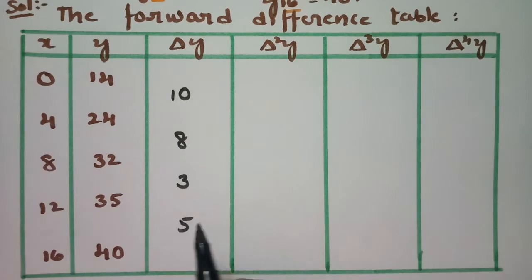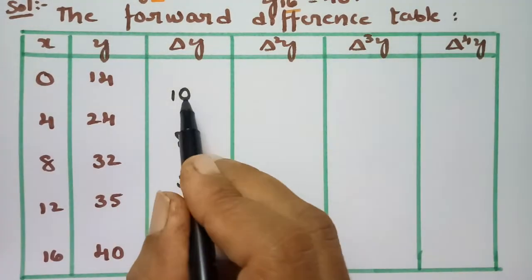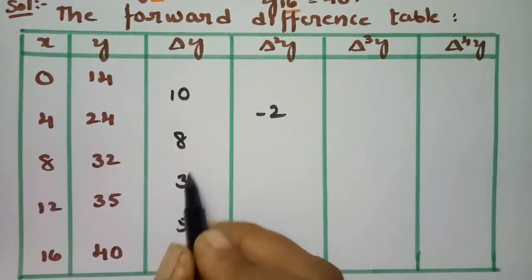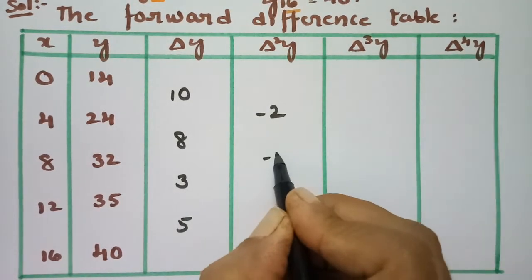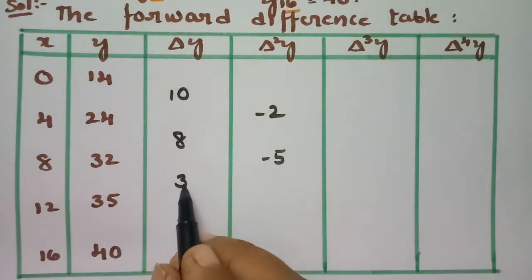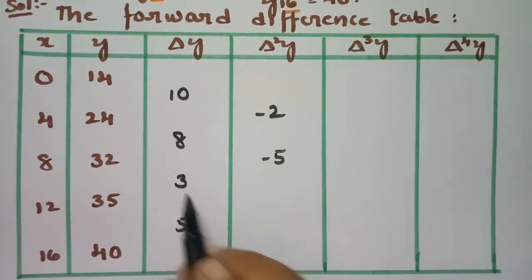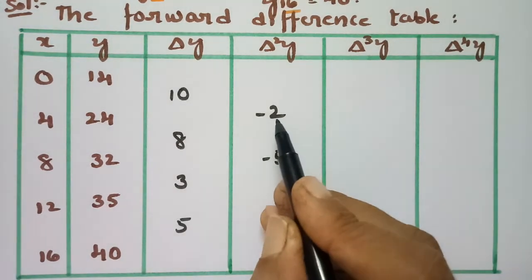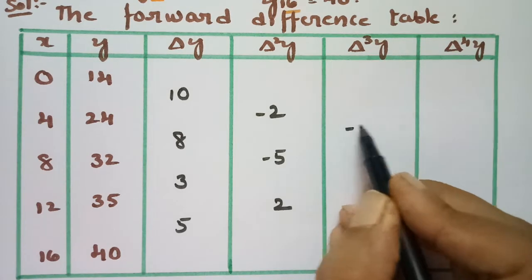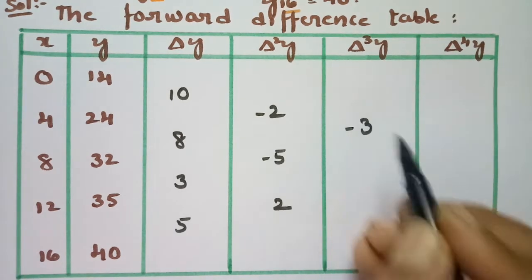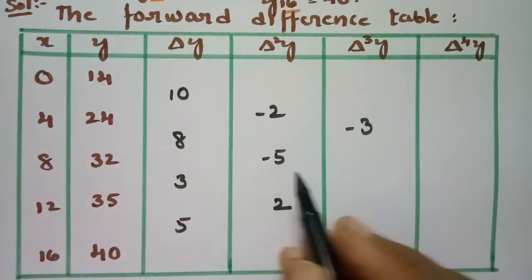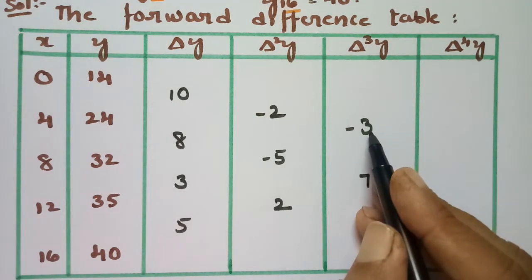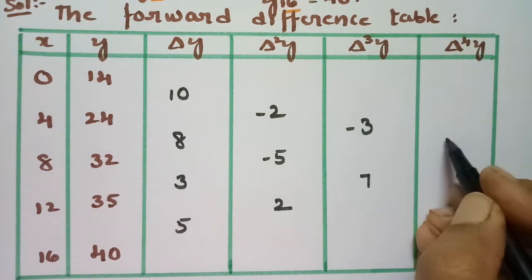For the second differences: 8 minus 10 equals minus 2, 3 minus 8 equals minus 5, and 5 minus 3 equals plus 2. For the third differences: minus 5 minus (minus 2) equals minus 3, and 2 minus (minus 5) equals 7. The fourth difference is 7 plus 3 equals 10.